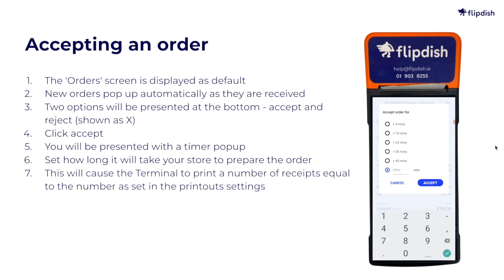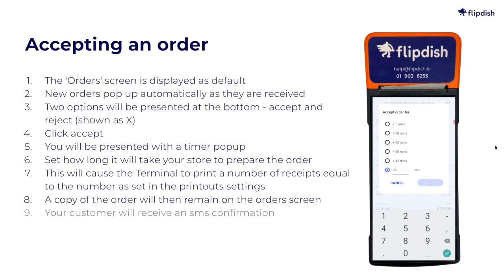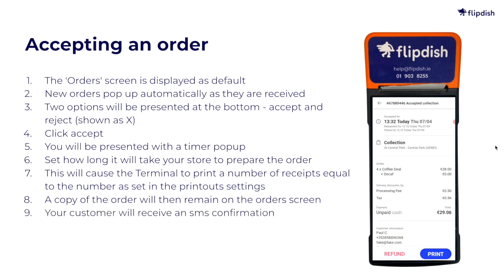This will cause the terminal to print a number of receipts equal to the number as set in the printout settings. A copy of the order will then remain on the orders screen. The order is accepted and your customer will receive an SMS confirmation.